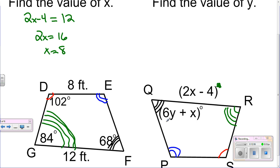Now we can use this value and plug it in here, so it's 6Y plus 8 equals—then what is congruent to Q? Well, it's F, and F is 68 degrees, so it's equal to 68 degrees.